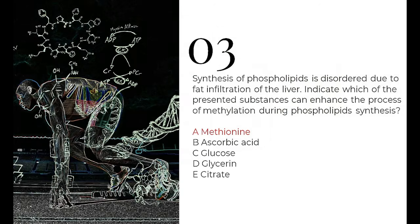The next question: synthesis of phospholipids is disordered in fat infiltration of the liver. We need to identify which substance can enhance the process of methylation during phospholipid synthesis. Think of the liver as a factory and the blood as the transport mechanism dumping fats into the liver for metabolism. When fat metabolism gets impaired, fats accumulate in the liver — this is called fatty infiltration of the liver.